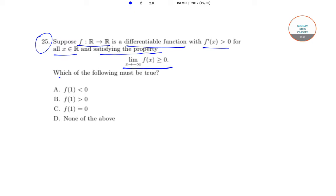Then which of the following must be true: f(1) is less than 0, f(1) is greater than 0, and f(1) is equal to 0, or none of the above. These are the four options.